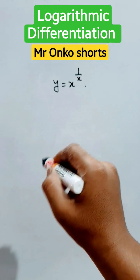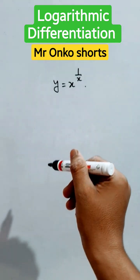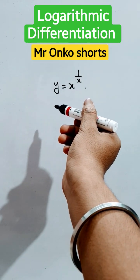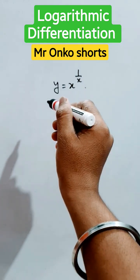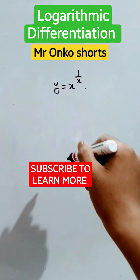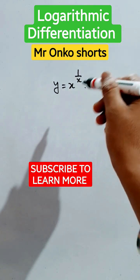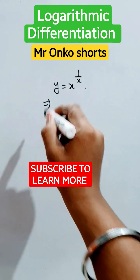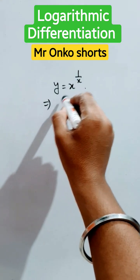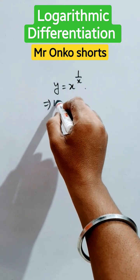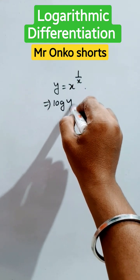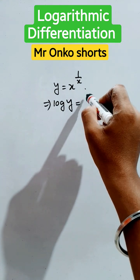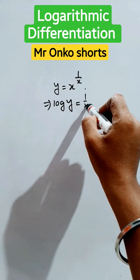Hello guys, welcome to Mr. Ronko Shorts. Today we will learn the differentiation process of this type of given function. First, take the logarithm of both sides, then the power will come in front of the logarithm as the rule of logarithm.